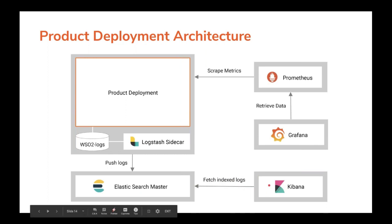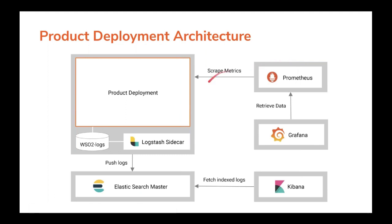Prometheus scrapes metrics from product deployments using services we have deployed. These performance statistics are gathered and stored in Prometheus. As shown earlier, we use the pre-built Grafana dashboards to fetch JVM statistics, JMX information, and probe data from the Prometheus cluster.